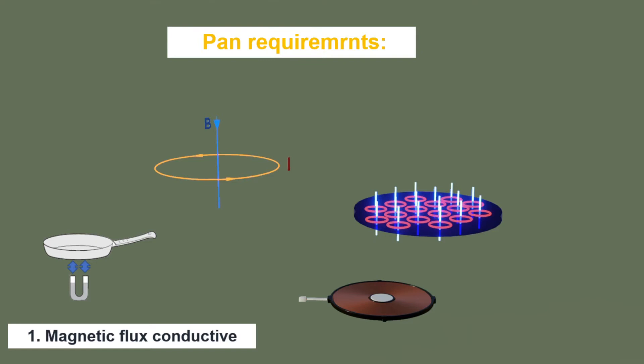They have to be made of magnetic materials, which are strongly attracted to a magnet. Second, they have to be electrically conductive, so they can generate eddy currents inside.